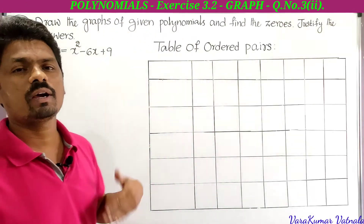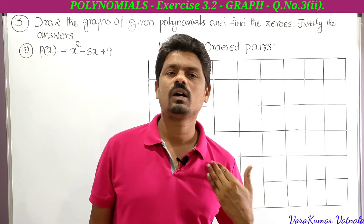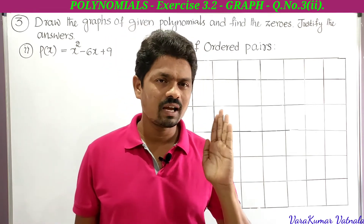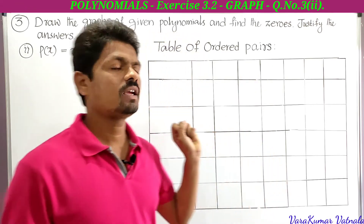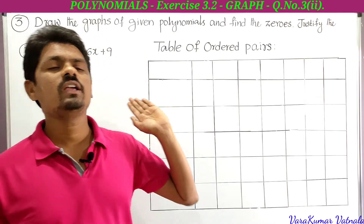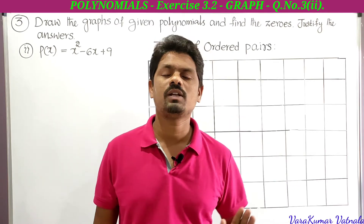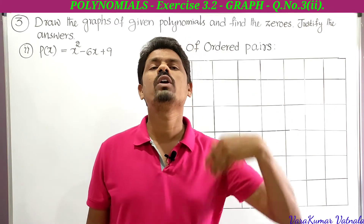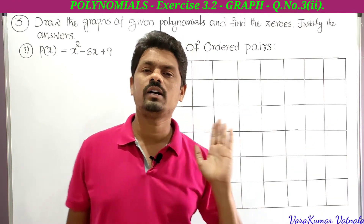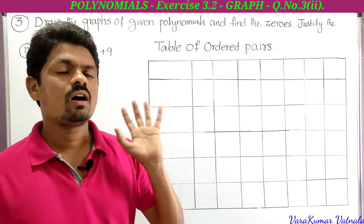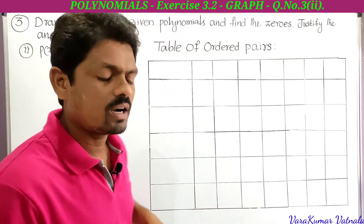p(x) = x² - 6x + 9. To draw the graph of the given polynomial, we first need some ordered pairs. We have to find the ordered pairs. Since p(x) = y, let y = x² - 6x + 9. By taking some x values we find the corresponding y values, then write them as ordered pairs. We need at least five or six ordered pairs for the polynomial.